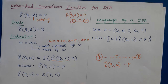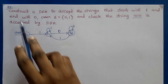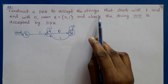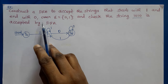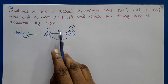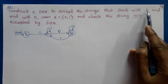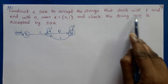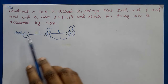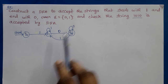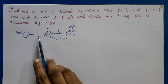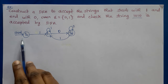Now we will see an example. The problem is: construct a DFA to accept all strings that start with 1 and end with 0, and check whether 1010 is accepted by our DFA or not. Since 1010 starts with 1 and ends with 0, it is definitely accepted. This is the DFA for this problem — it can accept all strings starting with 1 and ending with 0.